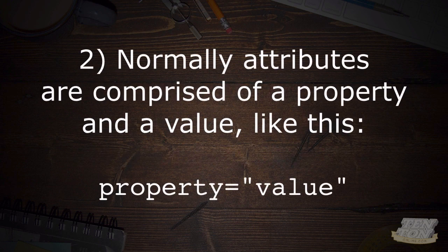Number two: normally, attributes are comprised of two things — a property and a value. The structure is: a property, an equal sign, and then in quotes, some kind of value. So it could be width equals and then in quotes a numerical value, or whatever that attribute might be. The structure is always the same: property, equals, and then in quotes, some kind of value.